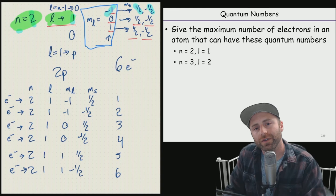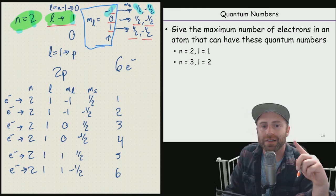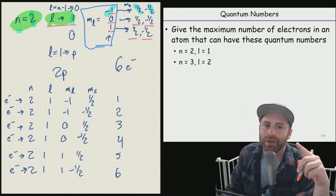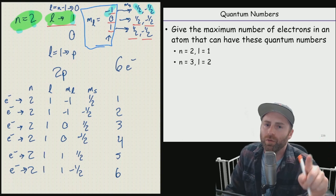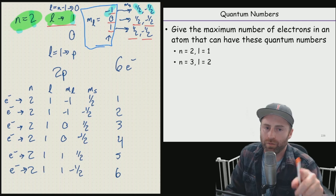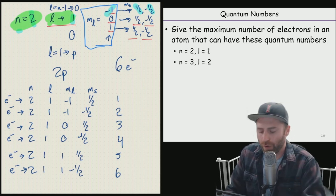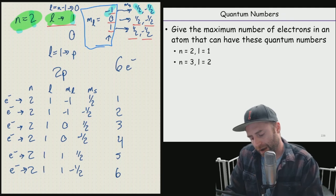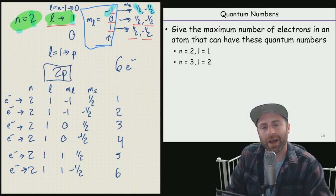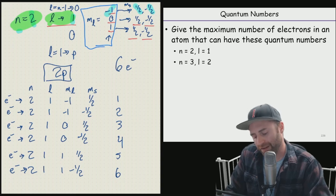I'm going to leave it to you to try out the next example here, this N equals three, L equals two. And if you want to be really good and test to make sure you know what you're doing, using N equals three, L equals two, go ahead and try to give out that shell designation in this capacity, the shell and the subshell.